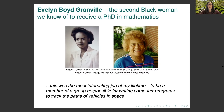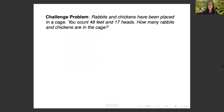Of this, Dr. Granville said, "This was the most interesting job of my lifetime, to be a member of a group responsible for writing computer programs to track the paths of vehicles in space." Dr. Granville was also interested in outreach, and one of her favorite outreach problems to work on with students was the following: Rabbits and chickens have been placed in a cage. You count 48 feet and 17 heads. How many rabbits and chickens are in the cage?